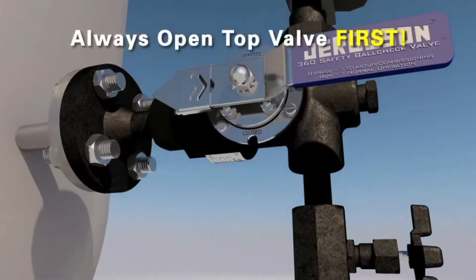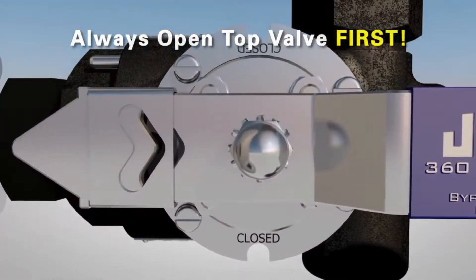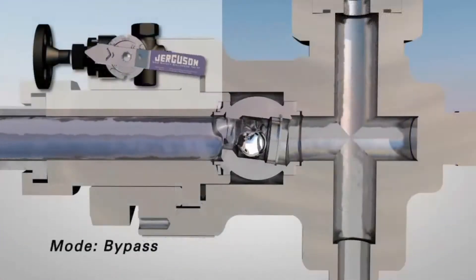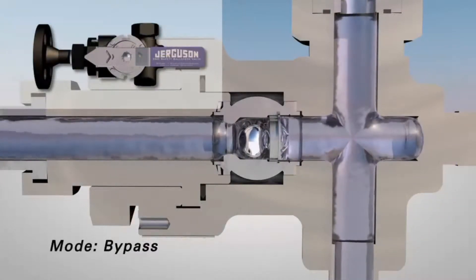It is best practice to always open the top valve first when commissioning any level device. Fluid will now flow through the valve and into the glass gauge without seating the ball check.